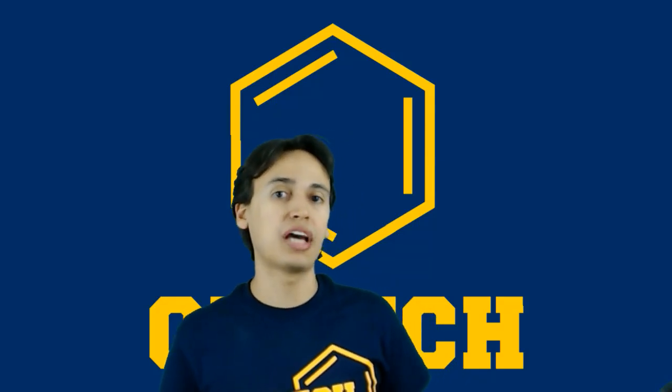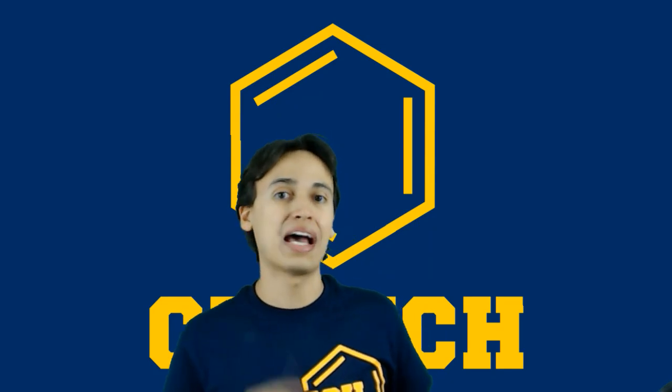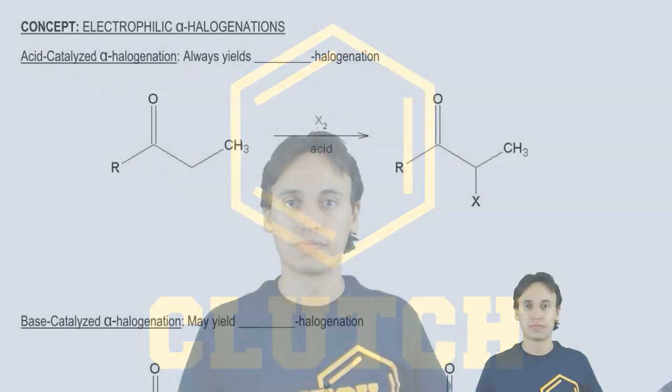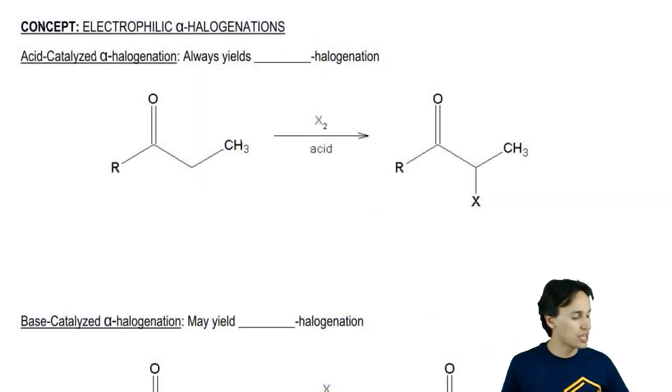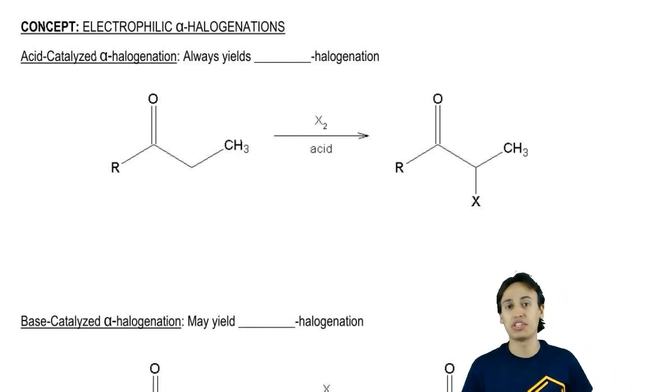Hey guys, in this video I want to talk about specific electrophilic alpha substitutions called alpha halogenations. It turns out that alpha halogenation can proceed through an acid catalyzed and a base catalyzed mechanism. I'm going to show you both but it's important to note they actually yield different products because of what the intermediates look like.